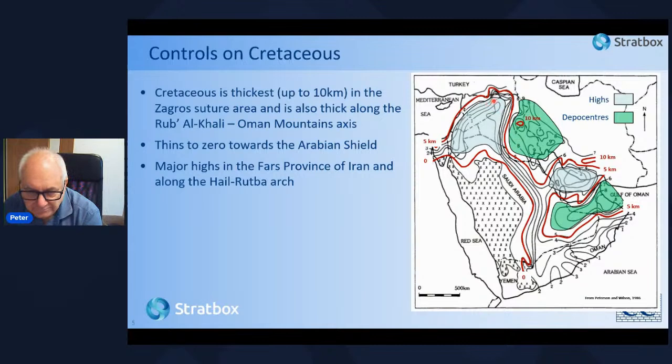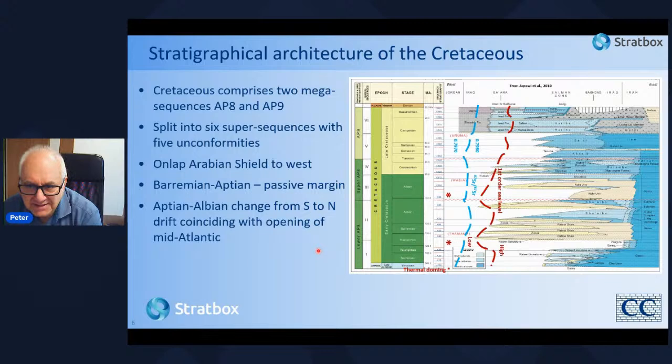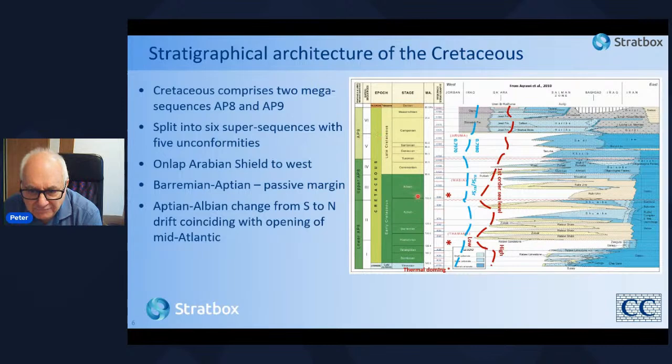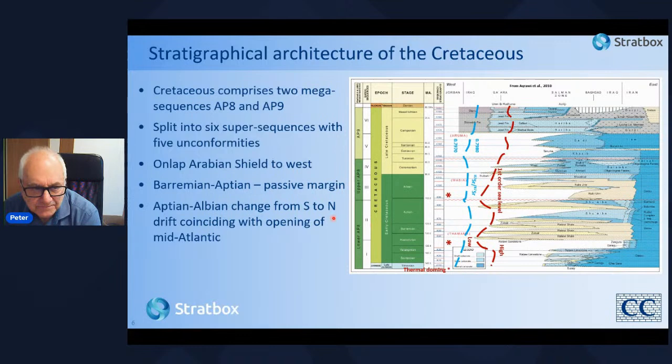This is the general stratigraphic architecture of the Cretaceous. This chronostratigraphic diagram is based on our work in Iraq and is published in the Petroleum Geology of Iraq book. I've also added the strontium isotope curve and the general first-order sea level curve from high sea level to low sea level.